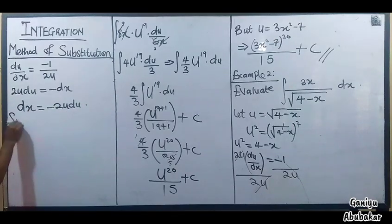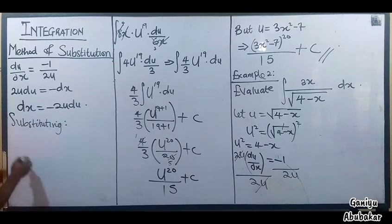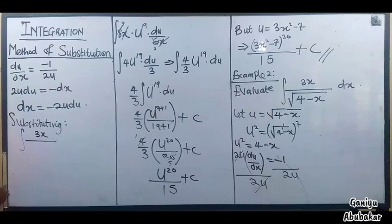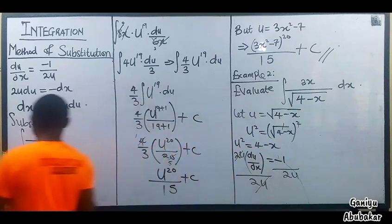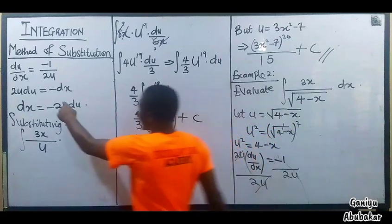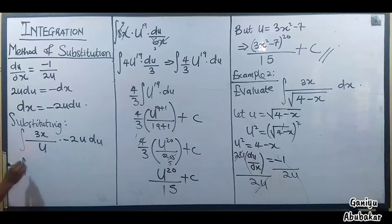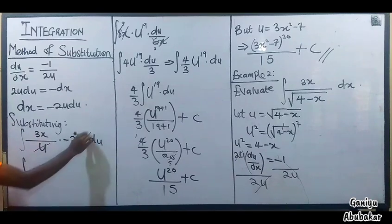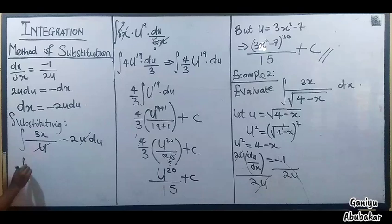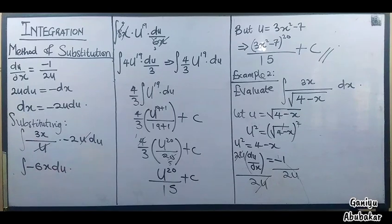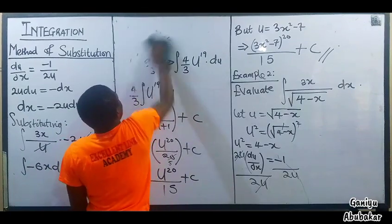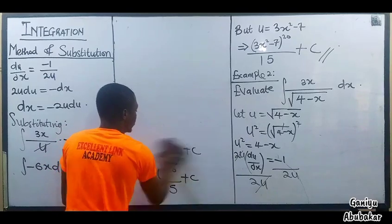Now substituting into the integral: the integral of 3x over u times dx. The root (4 - x) is u, so I put u in the denominator. dx was -2u du. So I have the integral of 3x over u times -2u du. The u cancels u, and 3 times -2 gives -6. I am left with -6 times the integral of x du.